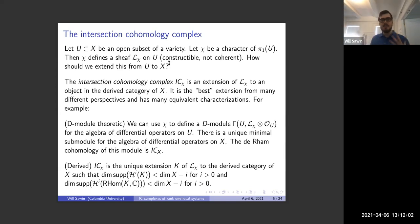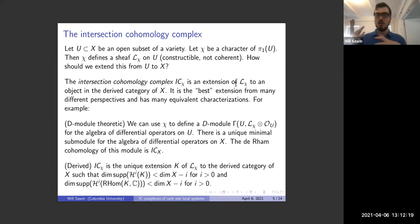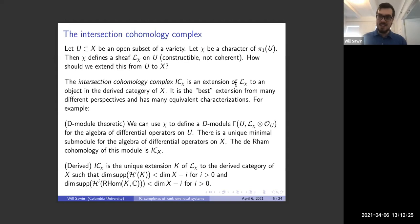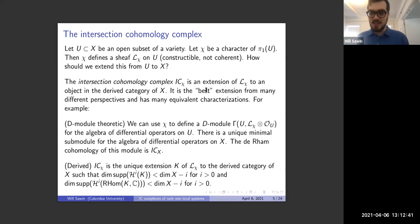The IC complex gives the best possible extension from many different perspectives. The only property it lacks that you might want is: you'd sometimes really want to extend to an actual sheaf on the larger space. But the IC complex doesn't do that — it extends to an object in the derived category of sheaves. It's like the nicest possible thing in the derived category of sheaves, but maybe unsatisfying if you'd prefer an actual sheaf.